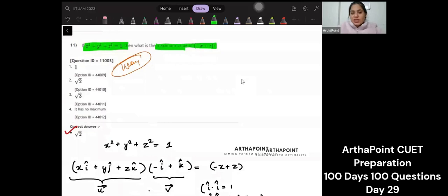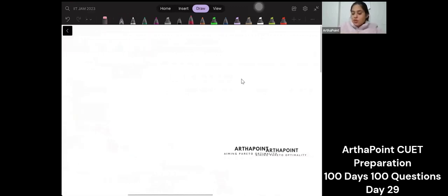What I have done is I have formulated this into two vectors. Ek property vector ki likh lete hai. Dekho, if I have two similar vectors, then their dot product will be 1.